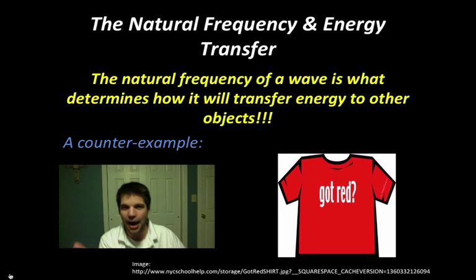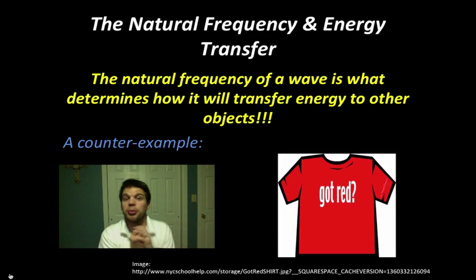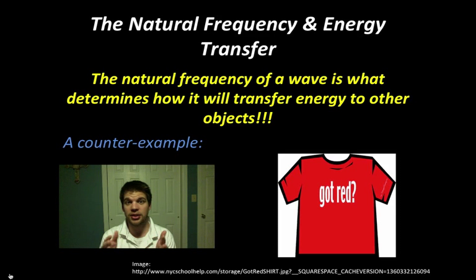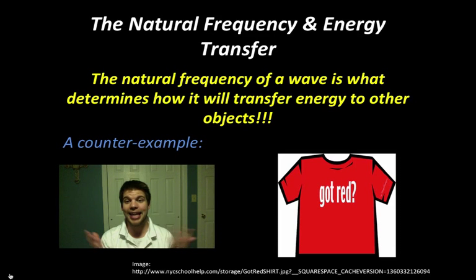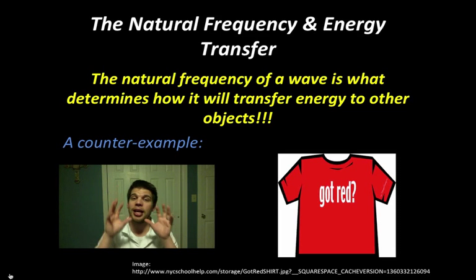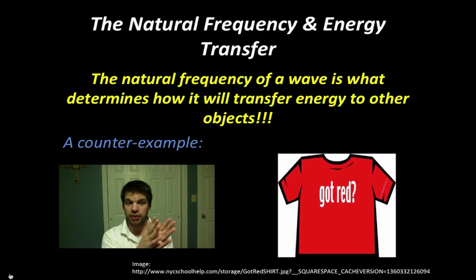Now let's look at a counterexample. We talked about selective absorption — what happens when energy is reflected instead? We saw this with the laser beam in class. Think about any colors we perceive with our eyes. Light we see is white light, which is a combination of all the colors in the spectrum: red, orange, yellow, green, blue, indigo, violet — all coming in through white light.